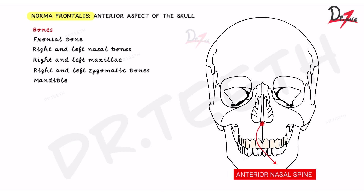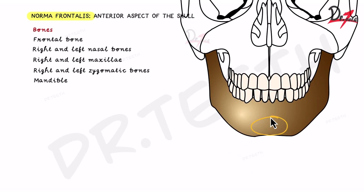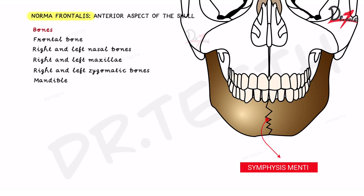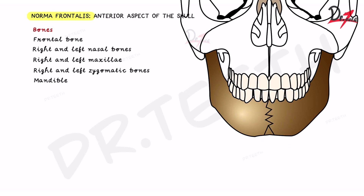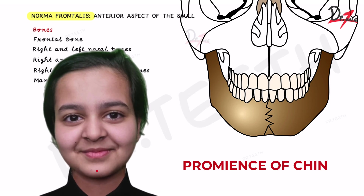The anterior nasal spine is a bony projection at the inferior aspect of the nasal aperture. Looking at the mandible, there is a slight bony prominence representing where the mandible was formed in two parts and fused in the center — that is the symphysis menti. Below the symphysis menti you will find a triangular elevation known as the mental protuberance, which gives prominence to our chin.